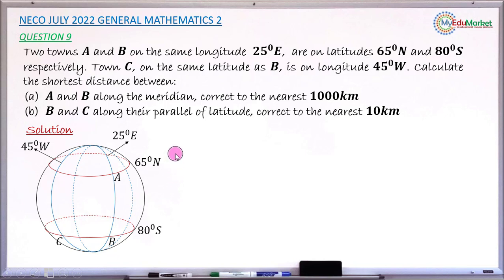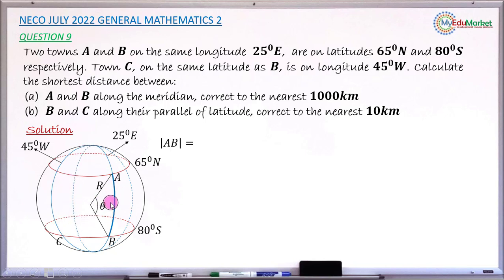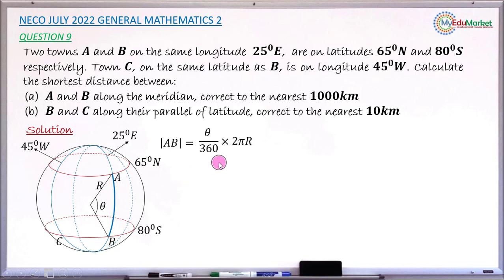For question (a), the distance between town A and town B along the same longitude 25°E is the length of arc AB, which is part of the circumference of that longitude. This arc subtends an angle theta at the centre of the Earth, and the longitude has radius equal to the radius of the Earth, R. The formula for arc length is: theta over 360, multiplied by 2πR.